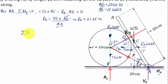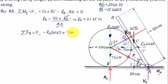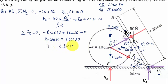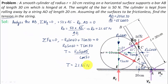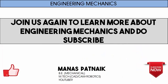Applying equilibrium in the x-direction: summation of forces = 0. RD sin 60 acts to the left (negative) and T cos 30 acts to the right (positive), so −RD sin 60 + T cos 30 = 0, giving T = RD sin 60 / cos 30. Since sin 60 = cos 30 = √3/2, they cancel out, so T = RD = 21.65 newtons.